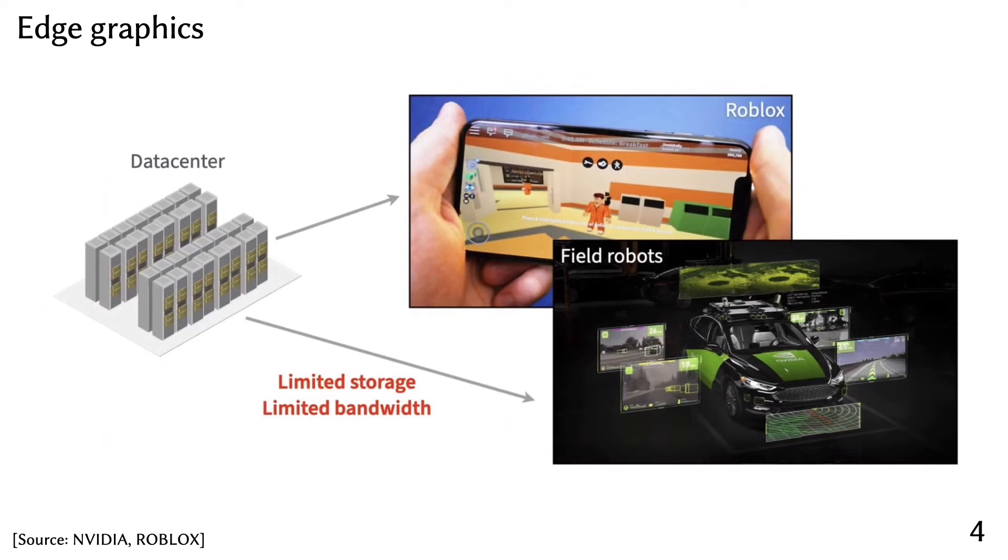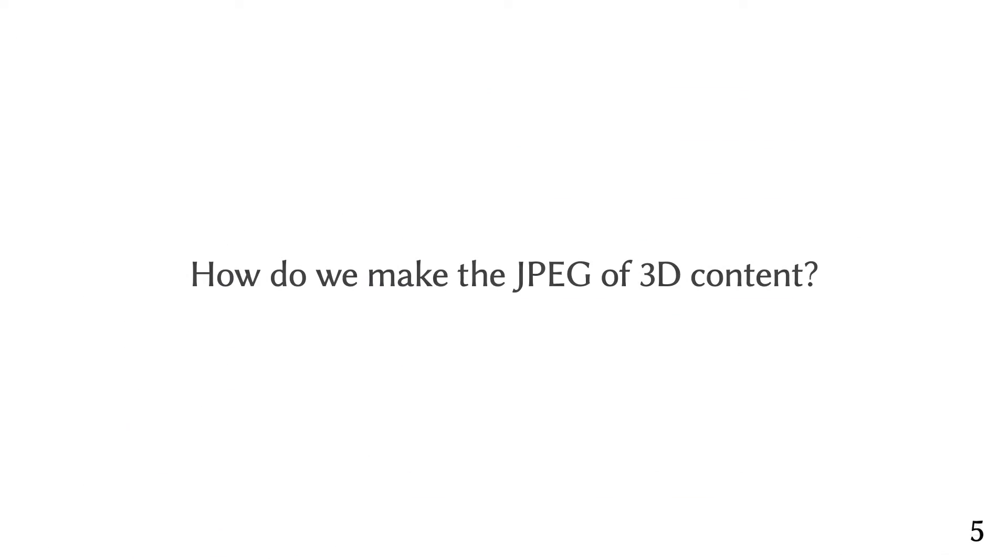We're also seeing a shift towards edge graphics where we want to stream 3D information over to clients like thin mobile phones and robots. This motivates the broad research question: how do we make the JPEG of 3D content which we can use as a compressed and efficient data transport format?